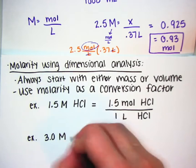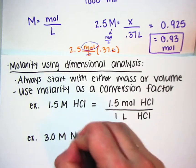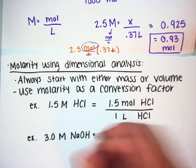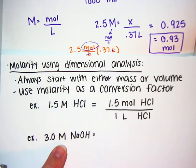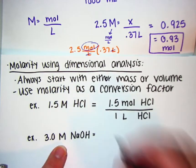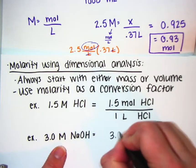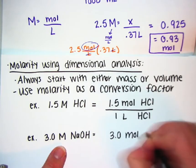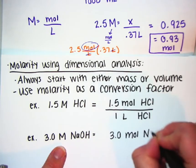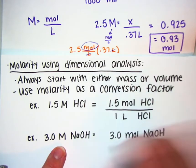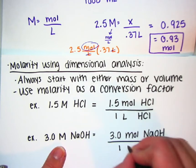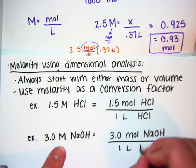Similarly, if I had a 3 molar solution of sodium hydroxide — molarity is moles per liter — if I have a 3 molar solution, that means I have 3 moles per every 1 liter.